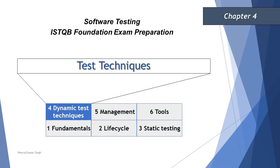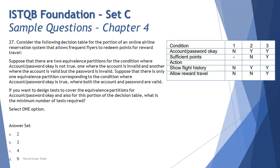Let's look at our next question, question number 27, which is about decision table testing. The question says: consider the following decision table for the portion of an online airline reservation system that allows frequent flyers to redeem points for reward travel. That's a very common scenario — if you use a credit card or online shopping, you do get rewards as points in return and you can redeem them.